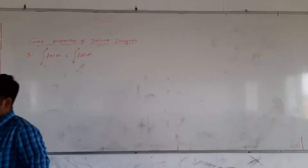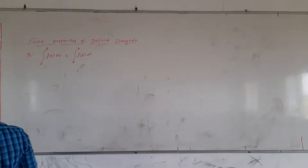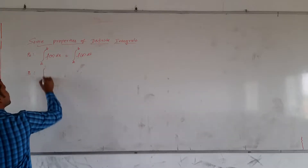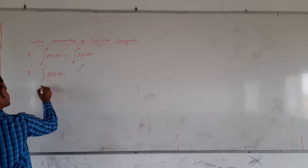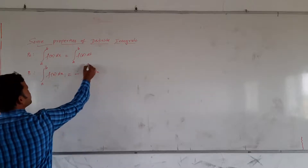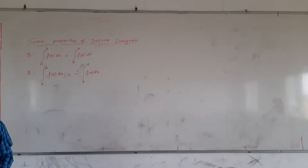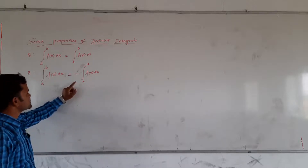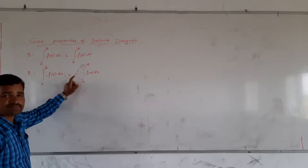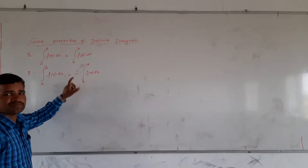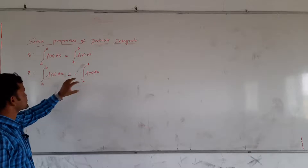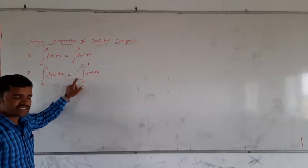Next, P1 property: integration of f(x) with respect to x from a to b is equal to minus of integration of f(x) from b to a. The change from LHS to RHS is that upper and lower limits have been interchanged. If we interchange upper limit and lower limit, the sign of the integral itself changes — the whole term gets multiplied by minus. That is the change here.